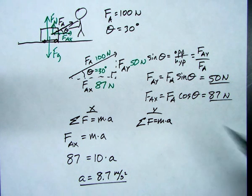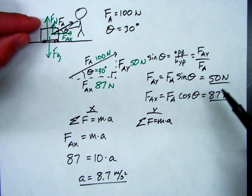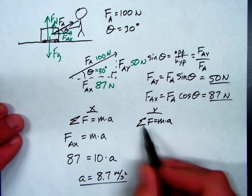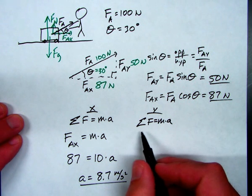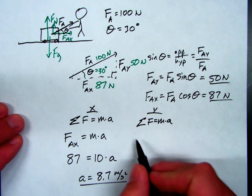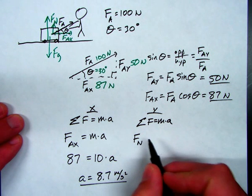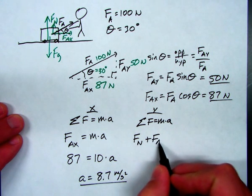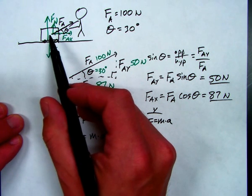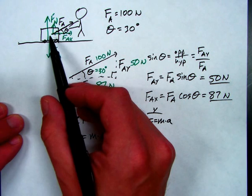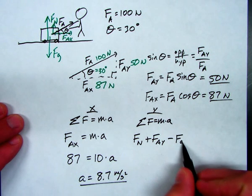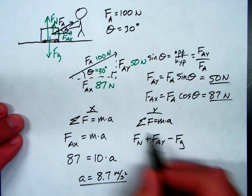If I needed to figure out what the normal force is or something else in the problem, I might need the vertical side of things, so I'll write this out as well. Forces that are up are positive, so I'm going to say that the normal force is up and FAY is up. Those are these two forces acting upward on this block. And there's a down force, gravity. I'm going to call gravity negative because it's down. That's my sum of forces in the Y direction.